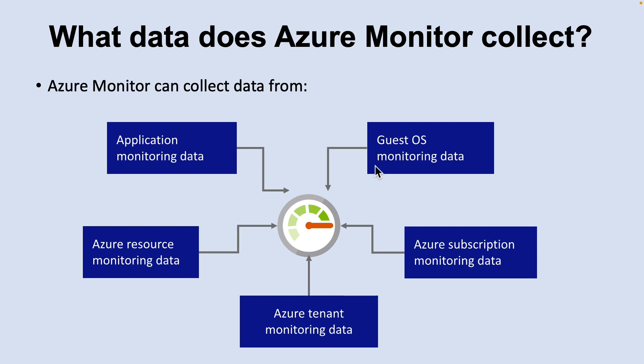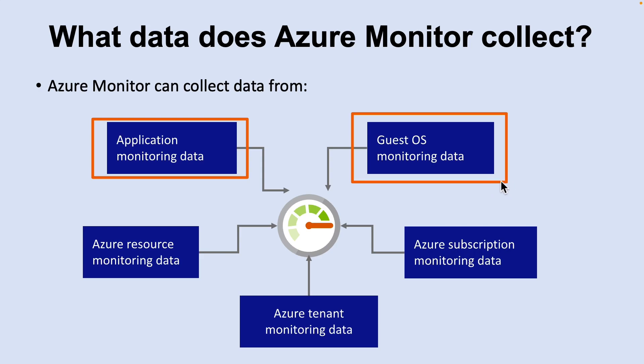Azure Monitor can collect data from a variety of sources. The first is Application Monitoring Data, which includes data about the performance and functionality of the code you have written regardless of its platform. The next is Guest Operating System Monitoring Data, which includes data about the operating systems on which your application is running — this could be running in Azure, another cloud, or on-premises.